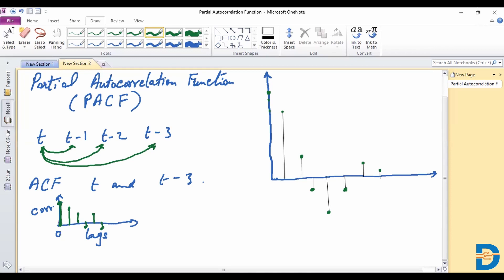However, for us to get the correlation between t and t minus 3, let's say this particular one here is identifying the correlation between t and t minus 3. It is worth noting that for ACF, we are not getting rid of any of the intermediate correlations.